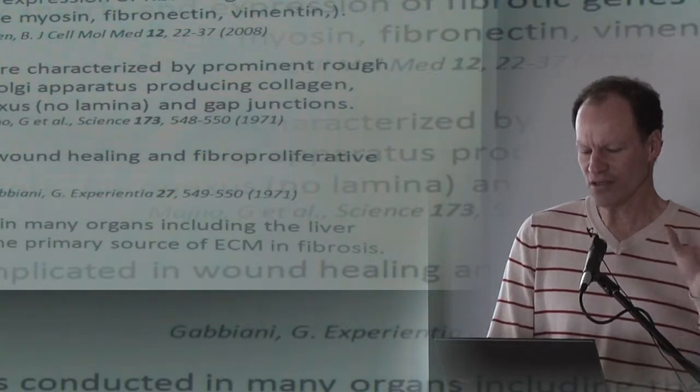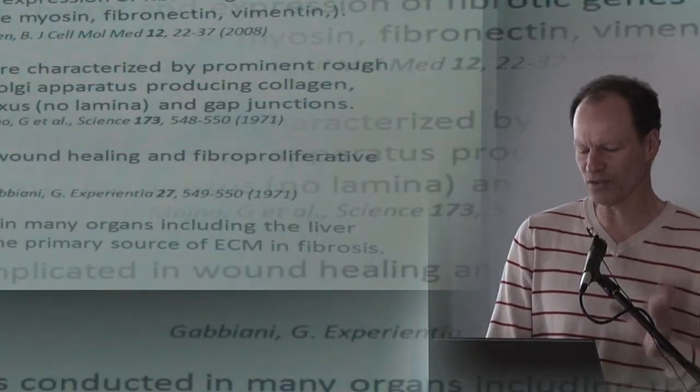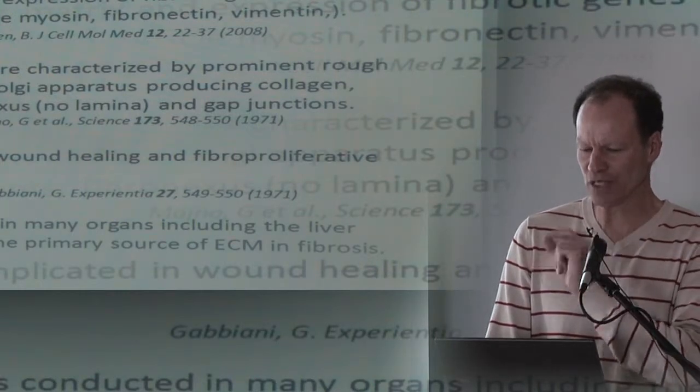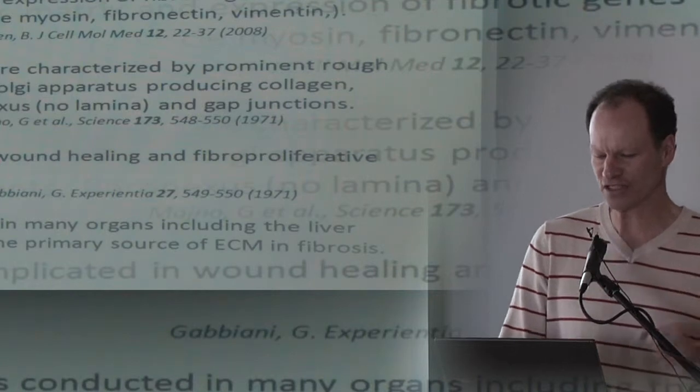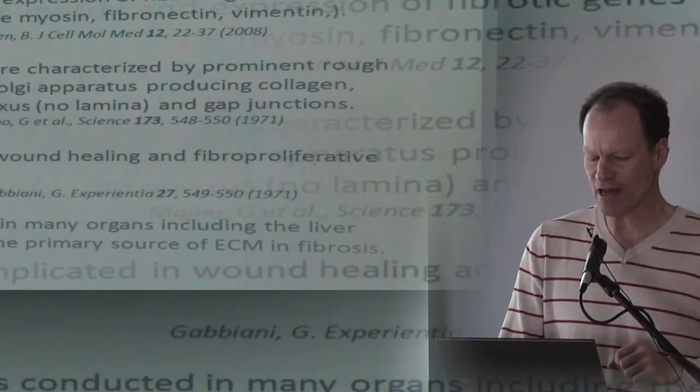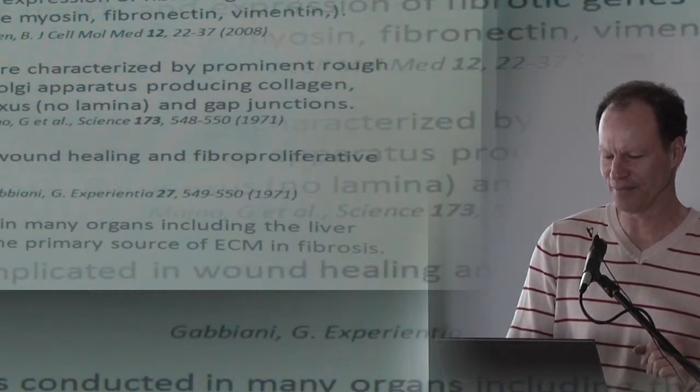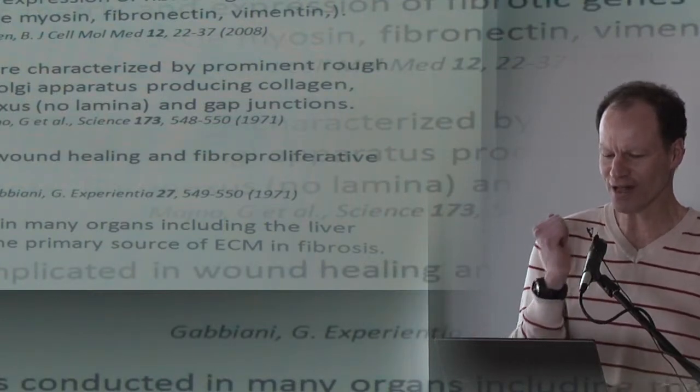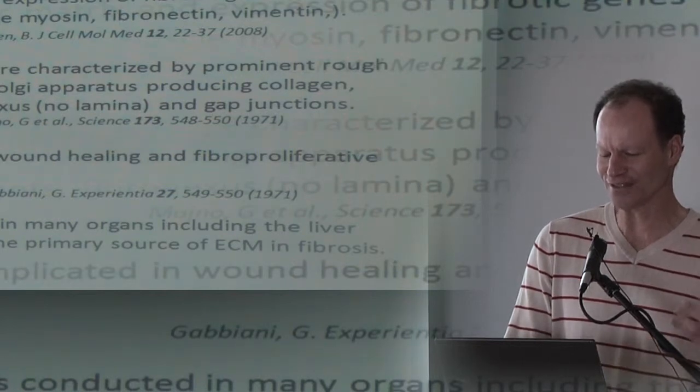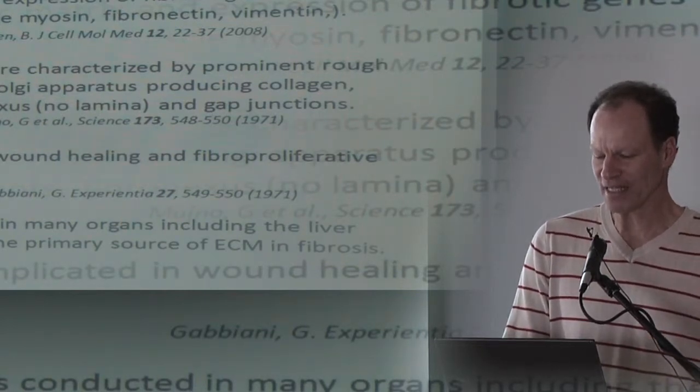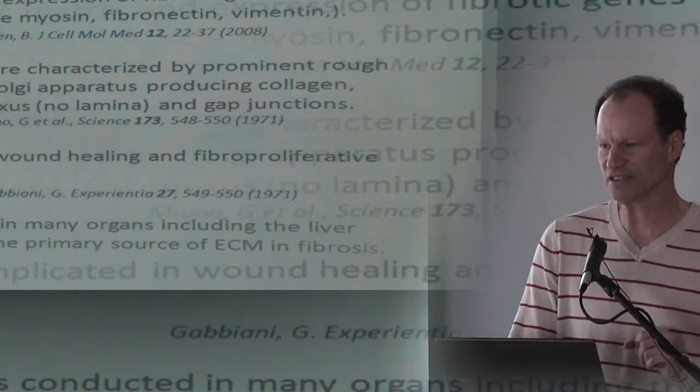If you do EM, you can get an even better definition identifying the rough ER, the Golgi apparatus, the in situ collagen, fibrillar collagen production, and other changes. If you look at all different diseases, and my colleagues in rheumatology tell me it's defining in rheumatology, it's defining in many kidney diseases, lung diseases, it is a cell that's producing the extracellular matrix.